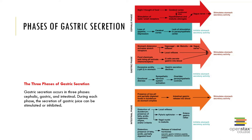We refer to those three phases as the cephalic phase, the gastric phase, and the intestinal phase. In the cephalic phase, the stomach responds to the mere sight, smell, taste, or thought of food. Due to that, about 20% of the total acid secretions actually occur before food even enters the stomach. A variety of sensory inputs converge on the hypothalamus.